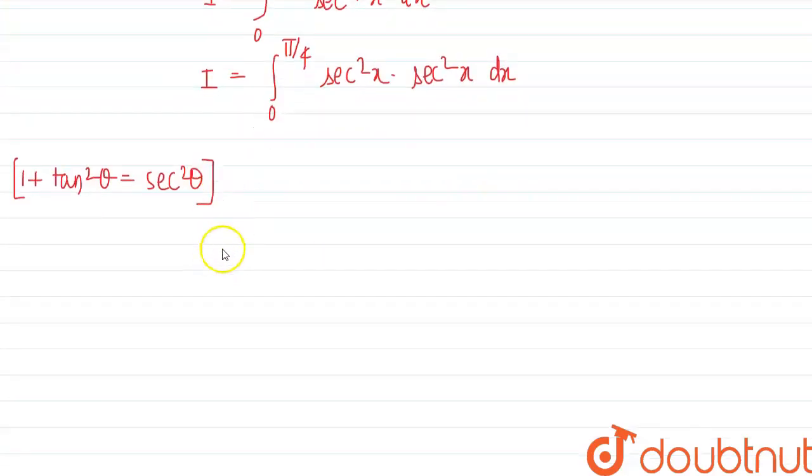So we can apply this over here. So the integral will become I is equal to 0 to pi by 4, sec square x will be 1 plus tan square x, into sec square x dx.